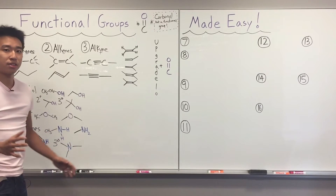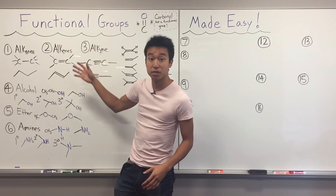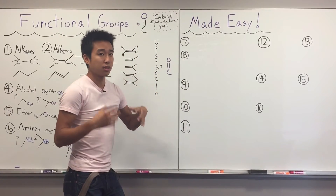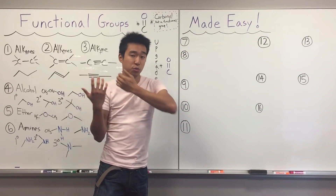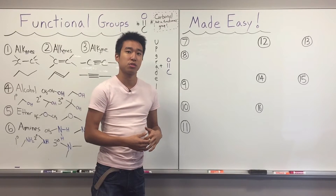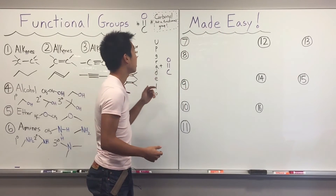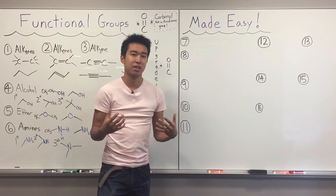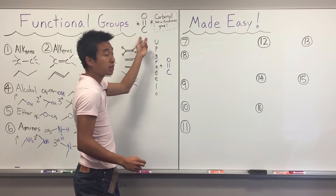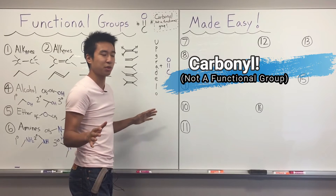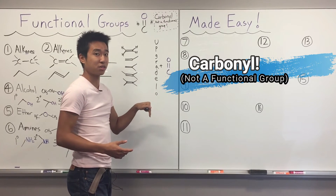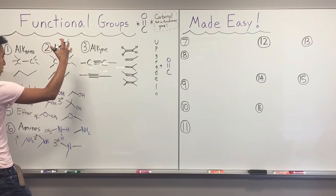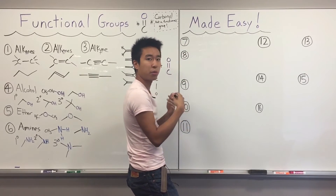Now we get to the fun part. To recap, our more basic functional groups are alkanes, alkenes, alkynes, alcohols, ethers, and amines. I now think of the more advanced functional groups by upgrading these basic ones with something called the carbonyl. A carbonyl is a carbon double-bonded to an oxygen — you'll see it all the time in Orgo. It's not a functional group itself, but it appears in many functional groups.